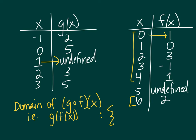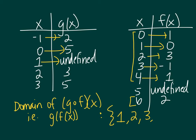Trying 1: it gets mapped to 0 by function f, and 0 gets mapped to 5 by g, so 1 does make it all the way through. Similarly, 2 will make it all the way through and is in the domain of the composite. For 3: 3 goes to negative 1, and negative 1 gets mapped to 2, so that makes it through as well. For 4: it is in the domain of f, however it doesn't make it through the composite function because 1 is not in the domain of g — so 4 will not be in the domain. Lastly, 6 will make it all the way through, so 6 will be in the domain.